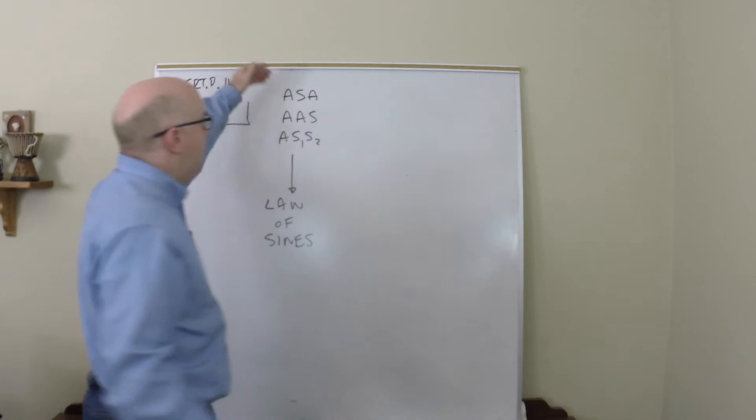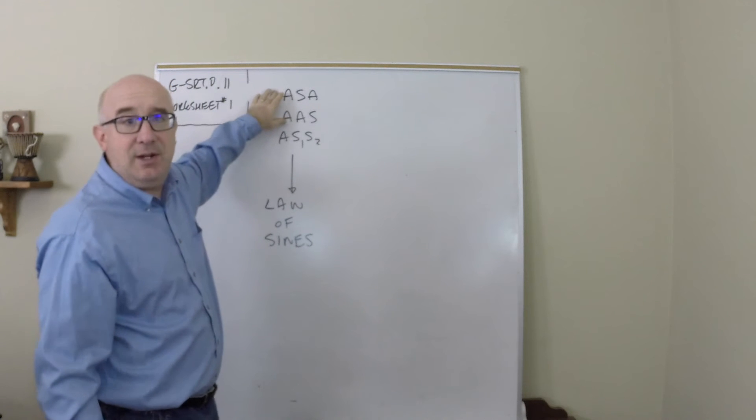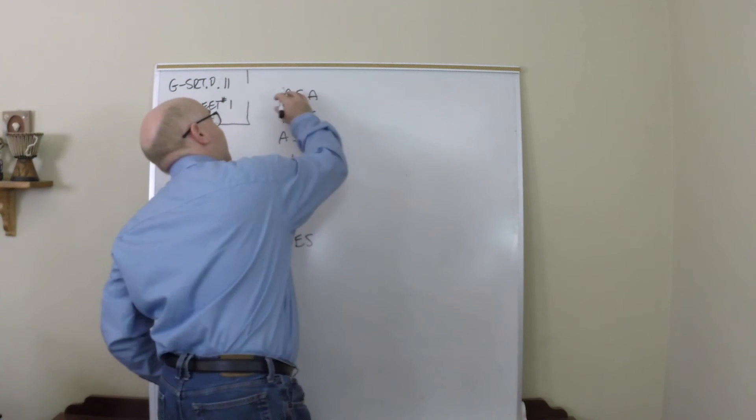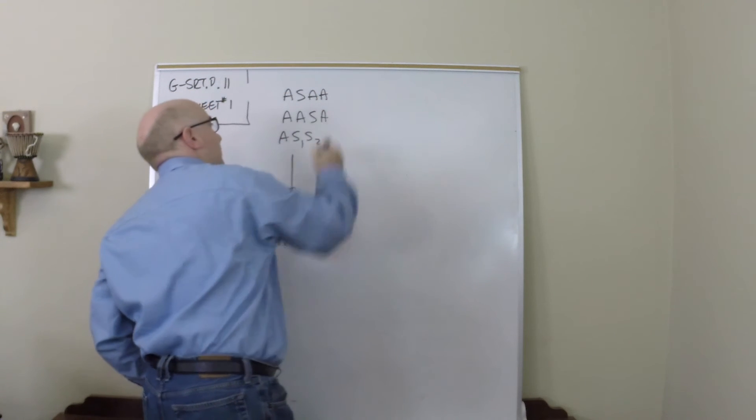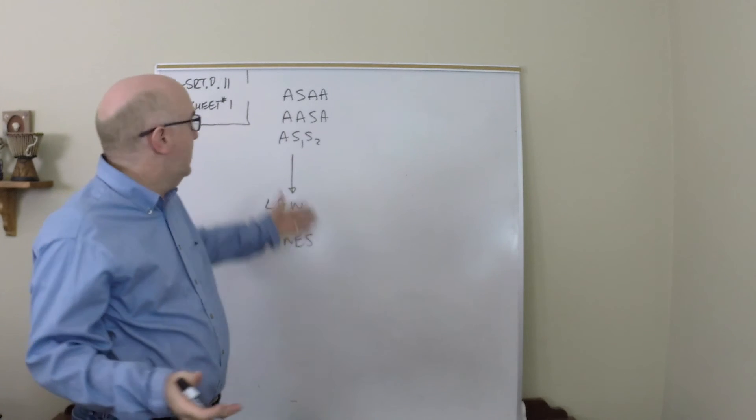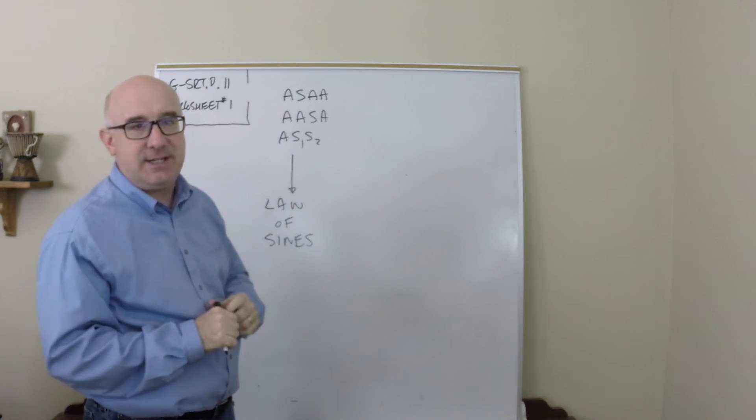you proceed when you have given at least two angles and a side. It does not matter the order. The reason it doesn't matter the order is because if you have two angles, you get the other angle along the way. So, you can proceed using that magical pairing that exists.